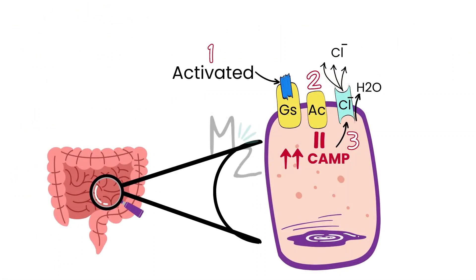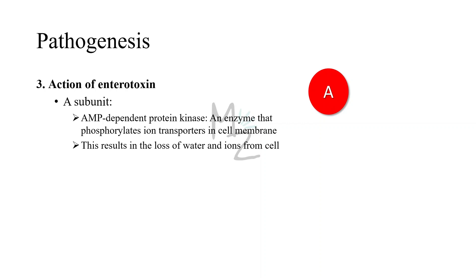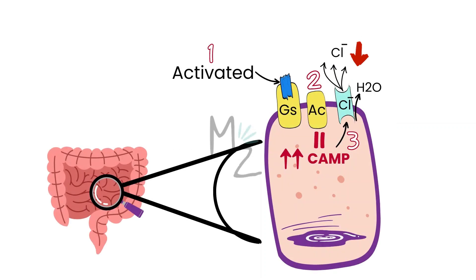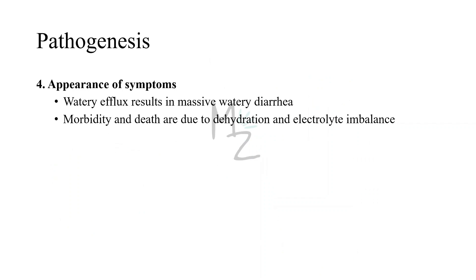Gs is the stimulatory G protein. This locks the Gs protein in the 'on' position, causing persistent stimulation of adenylyl cyclase. This results in overproduction of cyclic AMP, which activates cyclic AMP-dependent protein kinase — an enzyme that phosphorylates ion transporters in cell membranes, resulting in loss of water and ions from the cell. Step four: appearance of symptoms. The watery efflux enters the lumen of the gut, resulting in massive diarrhea that contains neither neutrophils nor red blood cells — that's why it's a non-bloody diarrhea. Morbidity and death are due to dehydration and electrolyte imbalance.